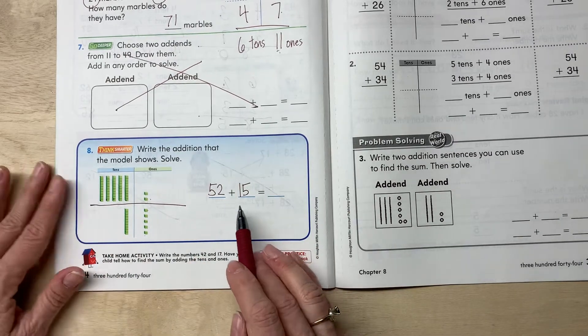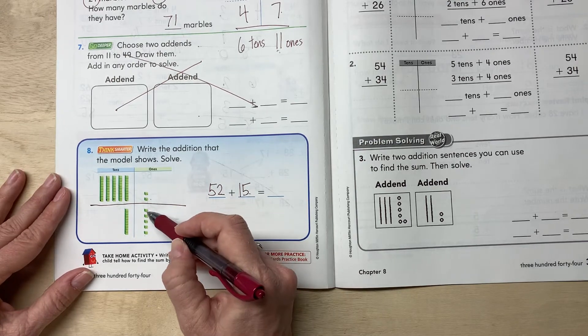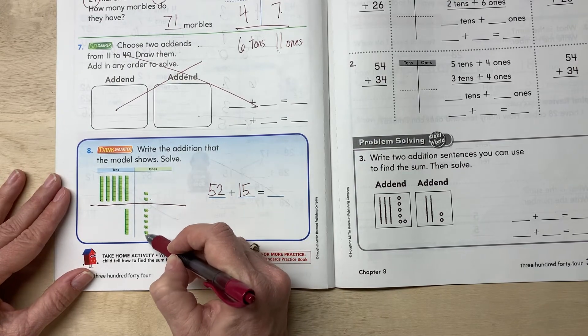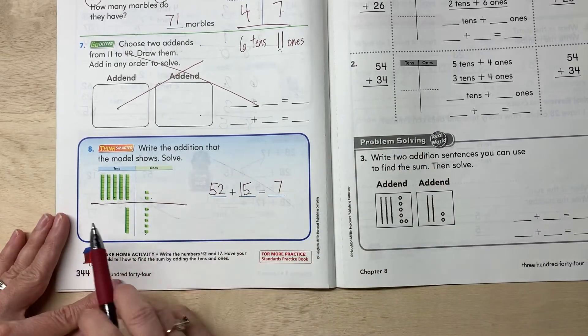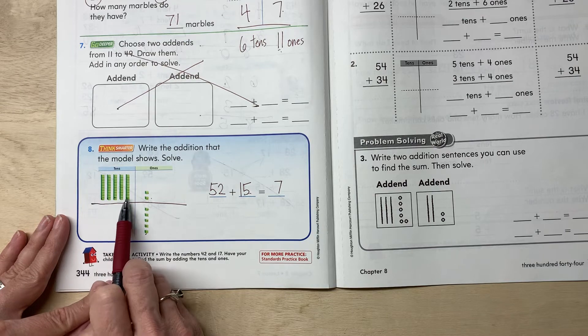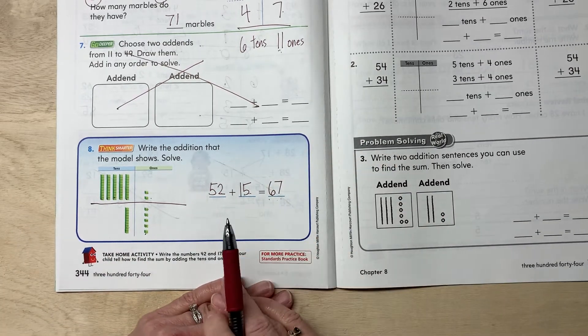So now we're gonna add them together. So how many ones do we have first? One, two, three, four, five, six, seven ones. And then how many tens do we have? One, two, three, four, five, six tens. So our answer is six tens and seven ones or 67.